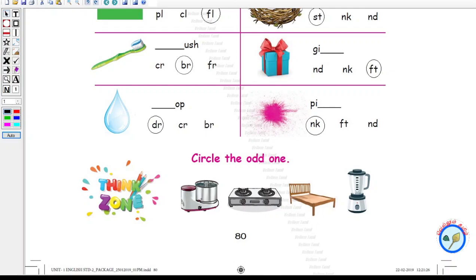So here this wet grinder, gas stove, and mixer is used in kitchen. You have seen these three things in kitchen. Only the cot you cannot see in the kitchen. So the odd one is cot.